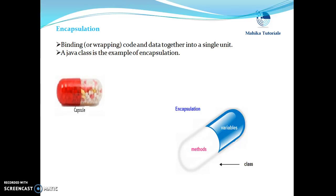Let us first see what is encapsulation. Encapsulation basically can be defined as wrapping of code and data together into a single unit. When we talk about a capsule, which is the collection of different types of medicines wrapped in a single unit, similarly in programming we can bind together related methods and related data items in a single unit, and that is known as a class.